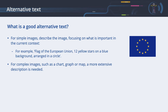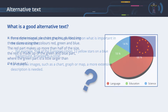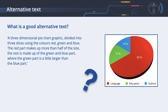For complex images, such as a chart, graph or map, a more extensive description is needed. We can see a pie chart with some statistics. What would be a good alternative description? A three-dimensional pie chart graphic divided into three slices using the colours red, green and blue. The red part makes up more than half of the size. The rest is made up of the green and blue part, where the green part is a little larger than the blue part. However, this is not quite right — it communicates the visual appearance of the graphic, but not the content, and does not offer any hint about what items are compared.